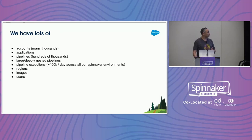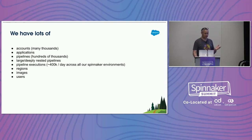We have deeply nested pipelines and around 400,000 executions a day across all of our Spinnaker instances. We're deploying things in lots of regions, we have lots of images, lots of users — we have lots of everything.